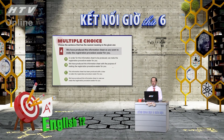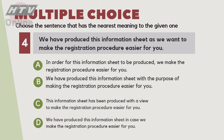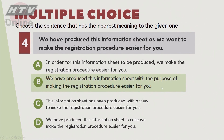Câu số 4: 'We have produced these information sheets as we want to make the registration procedure easier for you.' Đáp án chính xác là B: 'With the purpose of making the registration procedure easier.' Câu C sai vì 'with a view to' phải đi với 'making', không phải 'make'. Các bạn có thể nhầm lẫn giữa câu B và C.